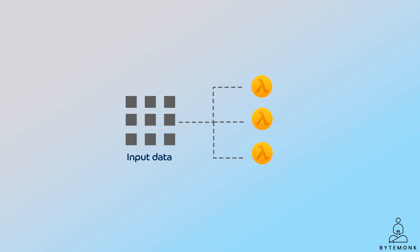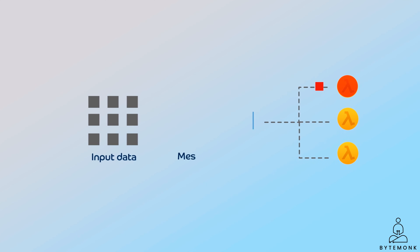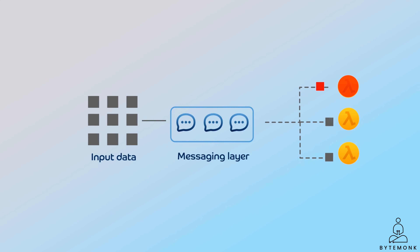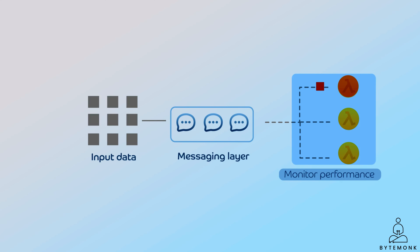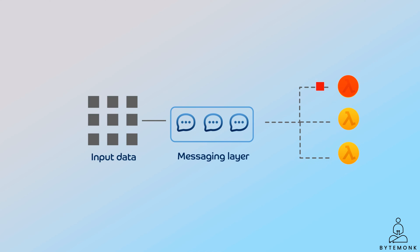For example, if a node or microservice fails, it is easy to replay messages through it to debug the problem. You can also use the persistent messaging layer to examine the state of the system at the time of failure. Additionally, you can easily monitor the performance of each microservice to identify potential problems before they cause outages. Finally, it is easy to modify microservices without disrupting the rest of the system because they are loosely coupled and stateless.